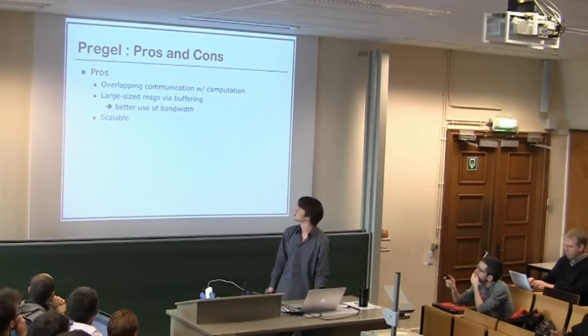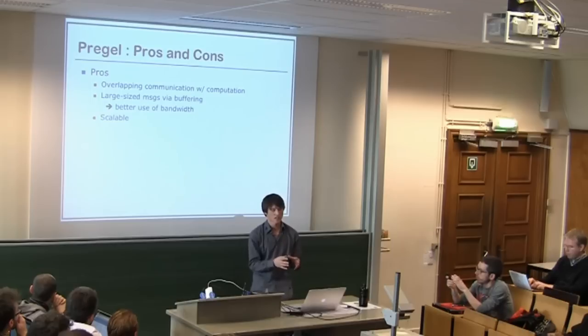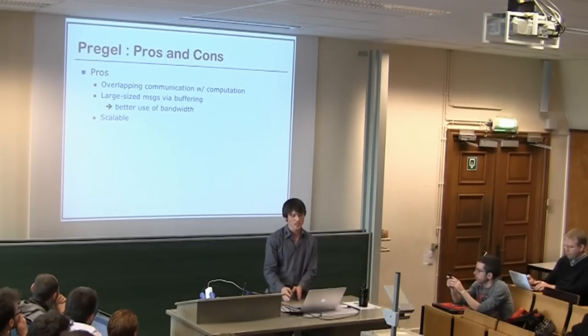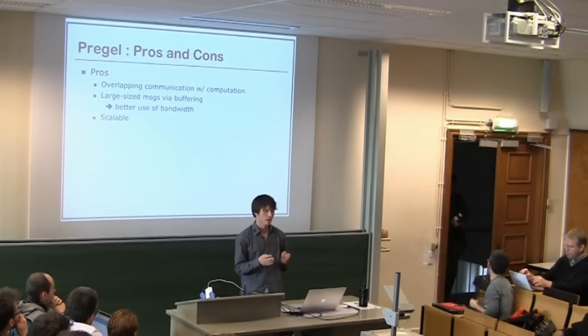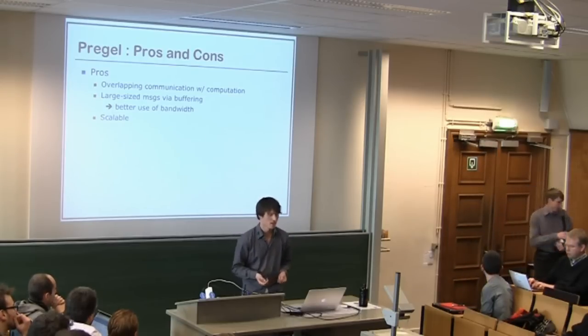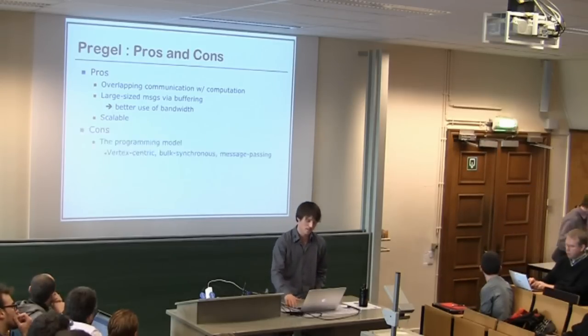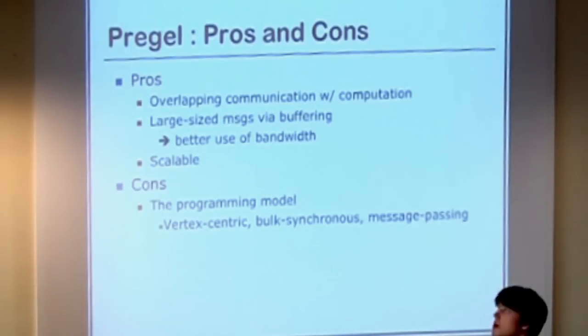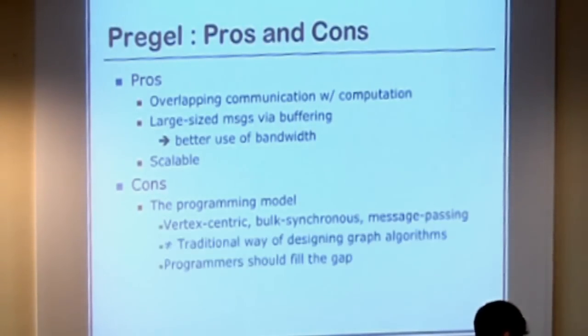So the advantages are that it's, because you have this bulk synchronicity, it's very efficient in overlapping communication and computation. And you can chunk all those messages together. So you can use your bandwidth better because you have less overhead, which makes it very scalable. But there's a very big disadvantage of this. And that's the programming model I just introduced. Because it's vertex centric, it's bulk synchronous, and it's message passing.